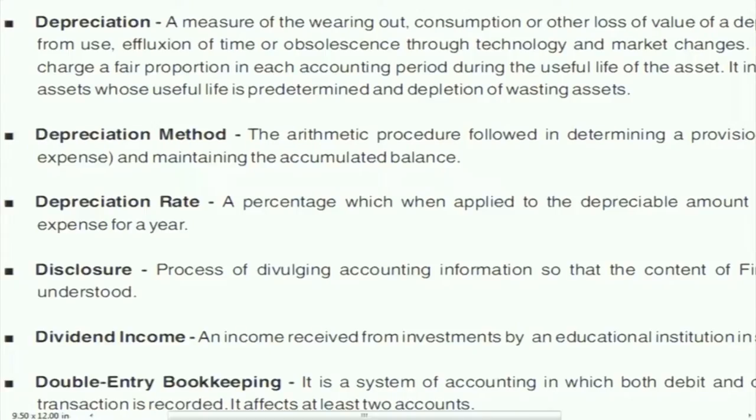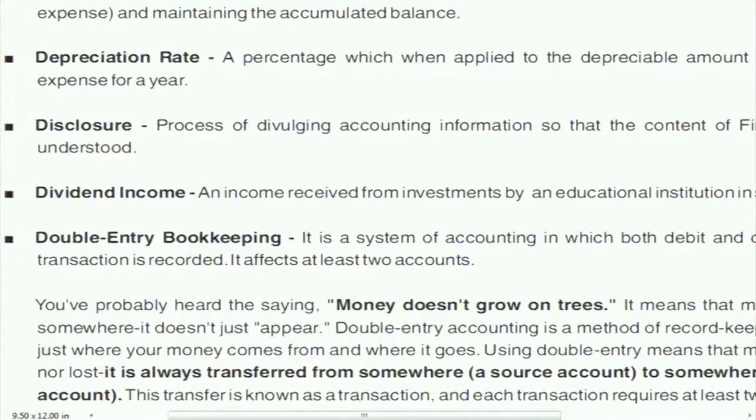Depreciation methods: there are two or three methods. Under the straight line method, 10,000 purchased over 10 years' life gives equal depreciation each year. Under the written-down value method, depreciation is higher in the first year — say 15% — and reduces over time as the asset gets older. The method depends on the type of asset.